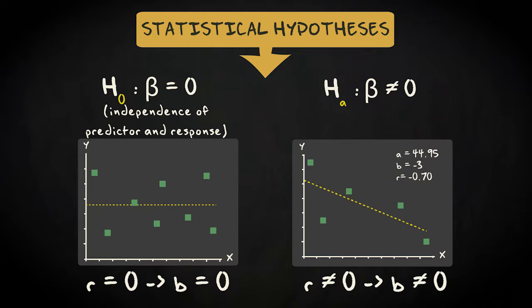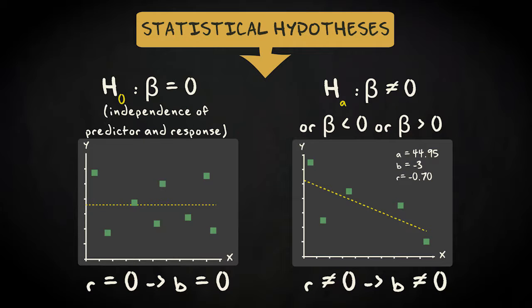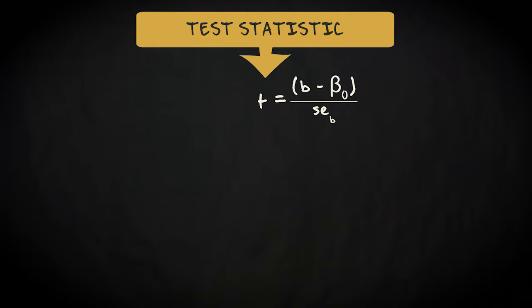We can specify an alternative hypothesis, either two-sided — beta does not equal zero — or one-sided — beta is smaller or greater than zero — if we expect a negative or a positive relation. I don't have a well-founded theory or previous findings to support a directional hypothesis, but let's assume the relation between cat age and video popularity is negative.